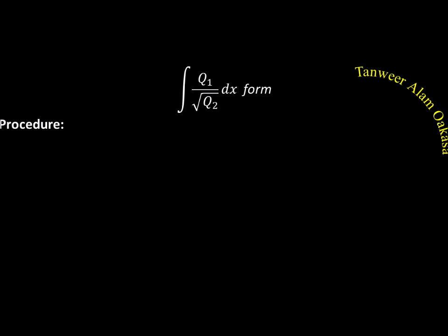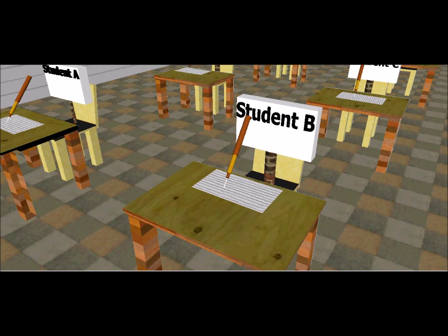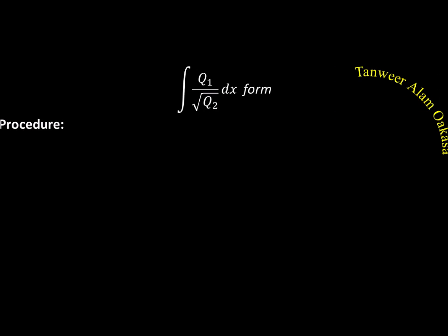How do we proceed when we have one quadratic in the numerator and another in the denominator? We express the numerator quadratic Q1 in terms of Q2. We write Q1 equal to A times Q2 plus B times Q2 dash plus C, where Q2 dash is the derivative of Q2.